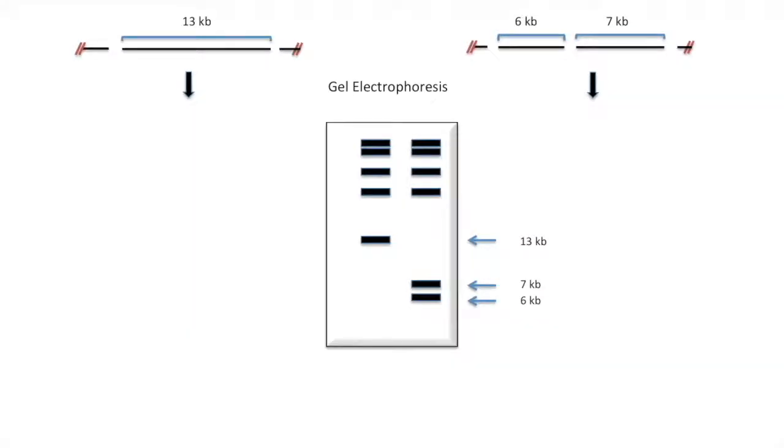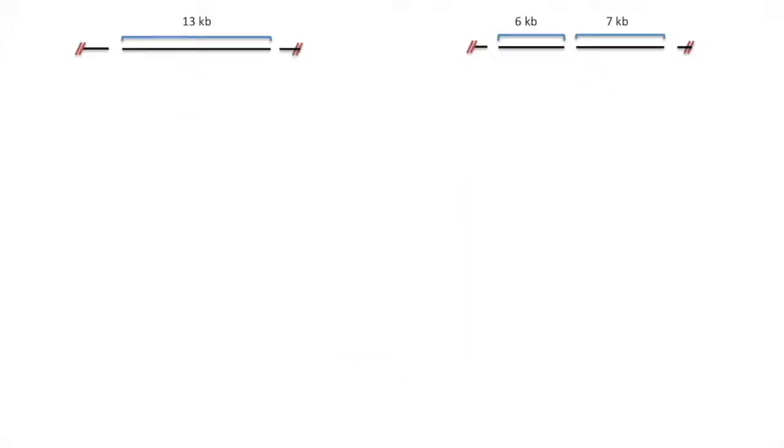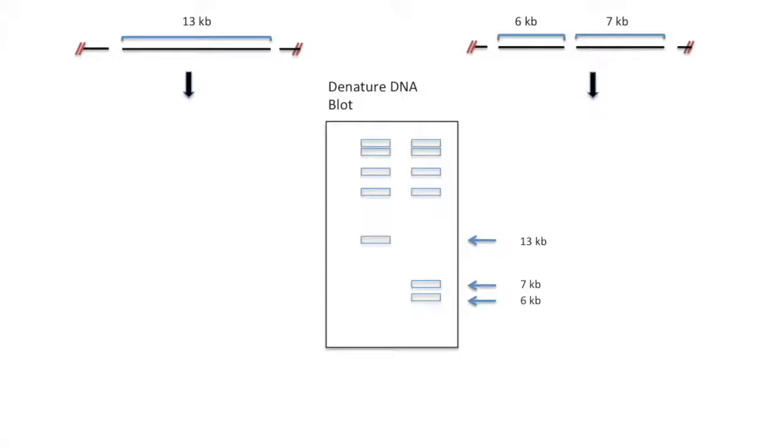But it's important to note there are other fragments in the experiment that will be on the gel. The DNA we are cutting is much larger than what is pictured here. To visualize the bands that will be informative, we Southern blot our gel so there are single-stranded DNA fragments on the filter. We've shown them here, but they are actually invisible.